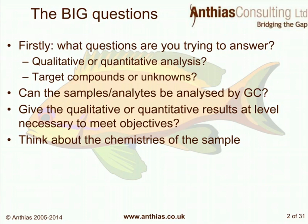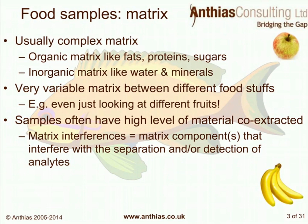We want to think about the chemistry of the sample — the chemistry of the analytes and also of the matrix. For food samples, this is usually a very complex matrix. You could have organic matrix like fats, proteins, or sugars, and inorganic matrix like water and minerals. Most of these matrix types are not very GC amenable. There can also be very variable matrix between different foodstuffs.